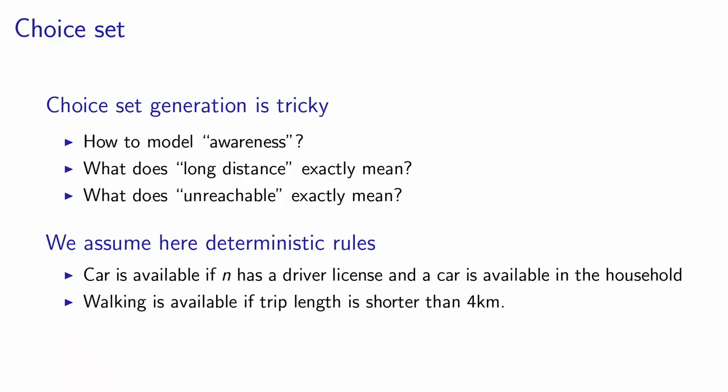Identifying the choice set for each individual is a very difficult process. How do you model awareness? How do you know that people are aware of the existence of a bus service or not? How do you decide what 'long distance' means — would people walk two kilometers, five kilometers, ten? How do you define this for each individual? And when you say that a bus stop is not reachable, what does it mean exactly? These questions are very difficult to deal with.